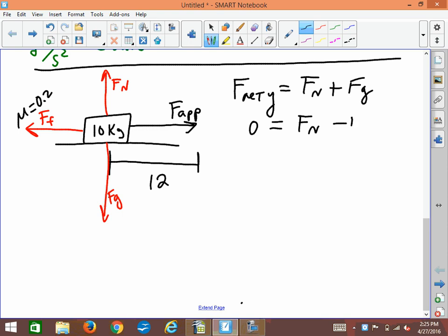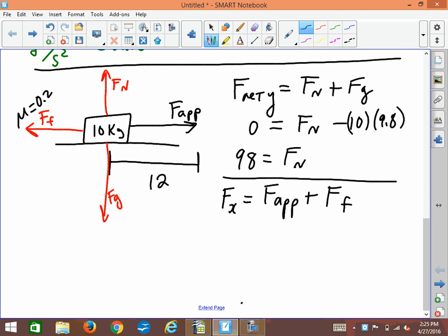And so what I have to do to figure out what the applied force is, is go through all the stuff from before that we learned already. F net y equals Fn plus Fg, 0, Fn. Now this would be minus 10 times 9.8. So I'd end up with a normal force of 98. 98 newtons. 10 times 9.8. But I'm going fast here because we know how to do this. We've done this so many times. Then we would do F net x. And this is where our F applied comes in.